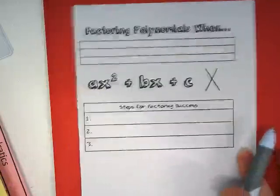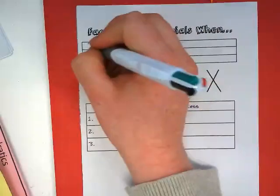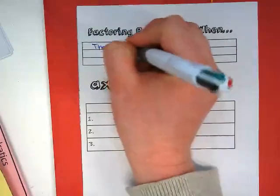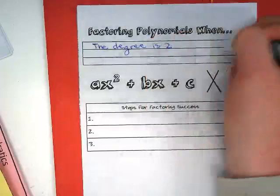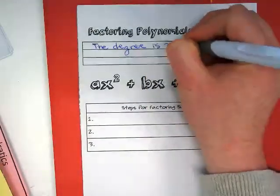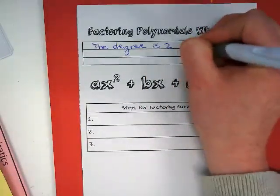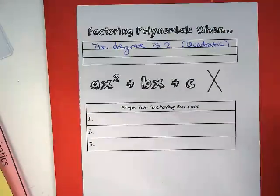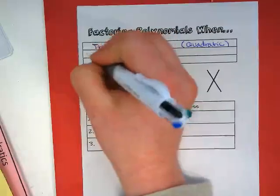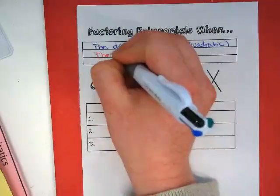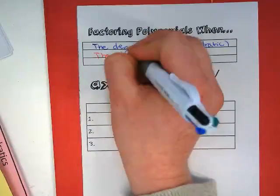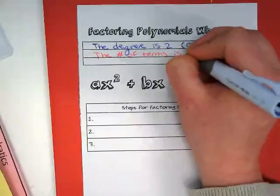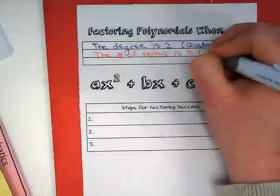So this is looking at factoring polynomials when the degree is 2, which means that the polynomial is a quadratic. When the number of terms is 3, which makes it a trinomial.